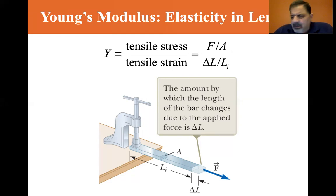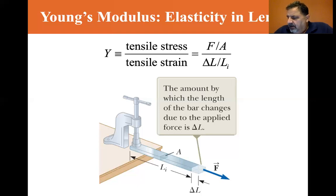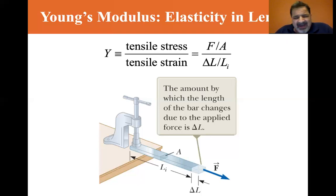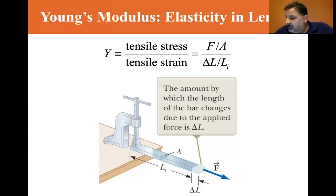We'll get to this more in chapter 14 when we study fluids, but just as an introduction: atmospheric pressure is 101.325 kilopascals, 14.7 pounds per square inch, 29.9 inches of mercury as used in weather, and 1013 millibars. Those are just some of the units of pressure that we're familiar with.